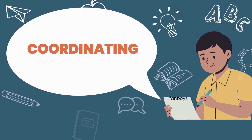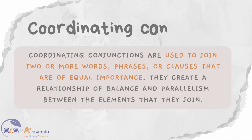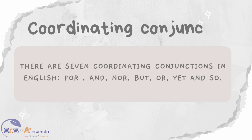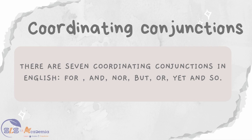First, let us learn about coordinating conjunctions. Coordinating conjunctions are used to join two or more words, phrases, or clauses that are of equal importance. They create a relationship of balance and parallelism between the elements they join. There are seven coordinating conjunctions in English: for, and, nor, but, or, yet, and so. They enable the formation of compound sentences and contribute to the overall coherence and flow of writing.